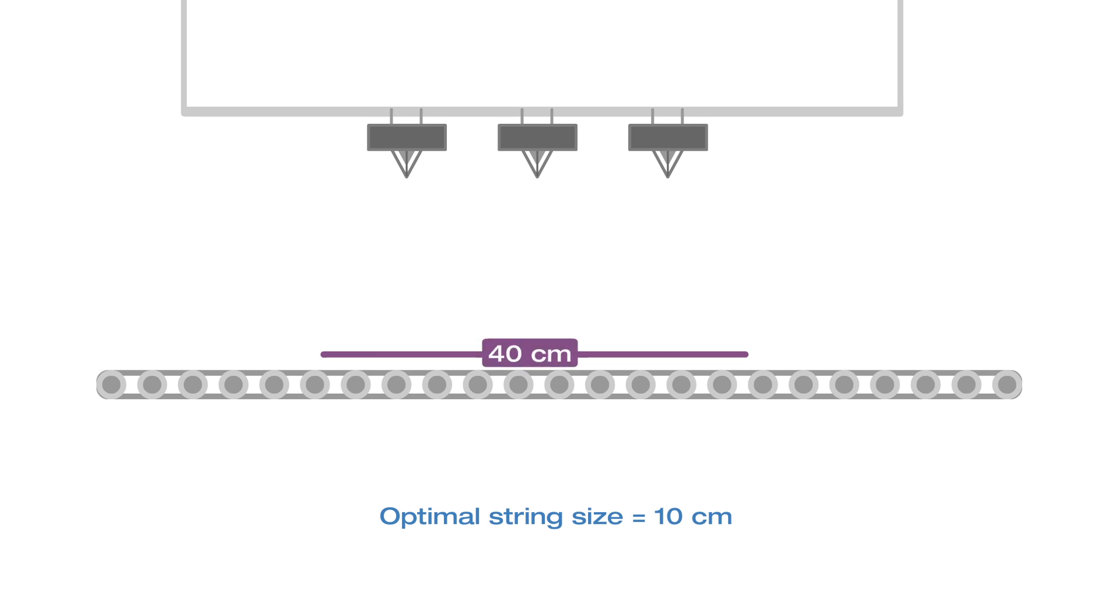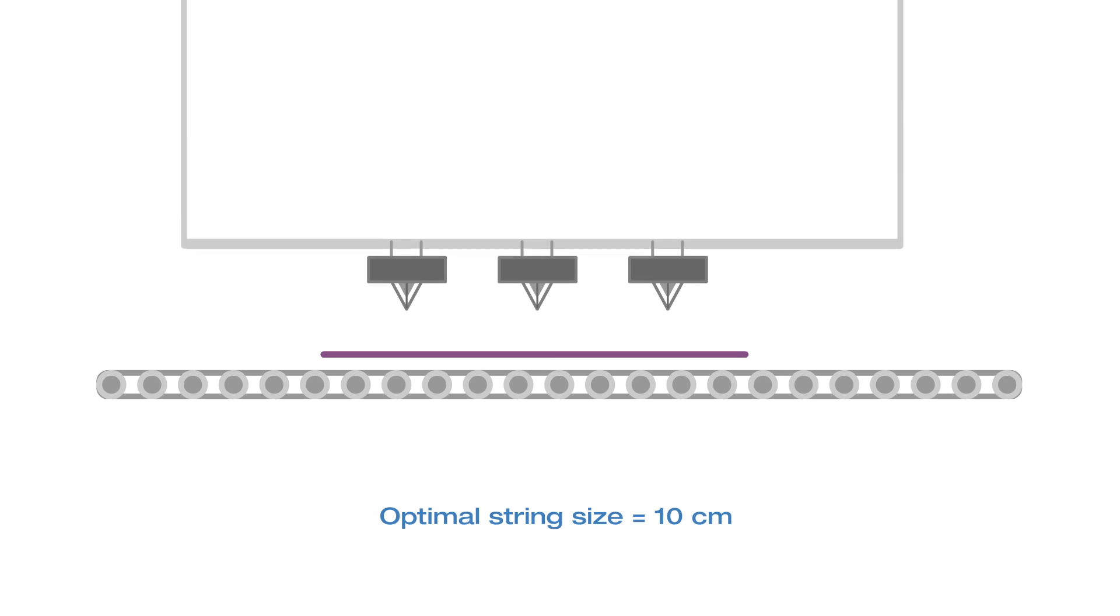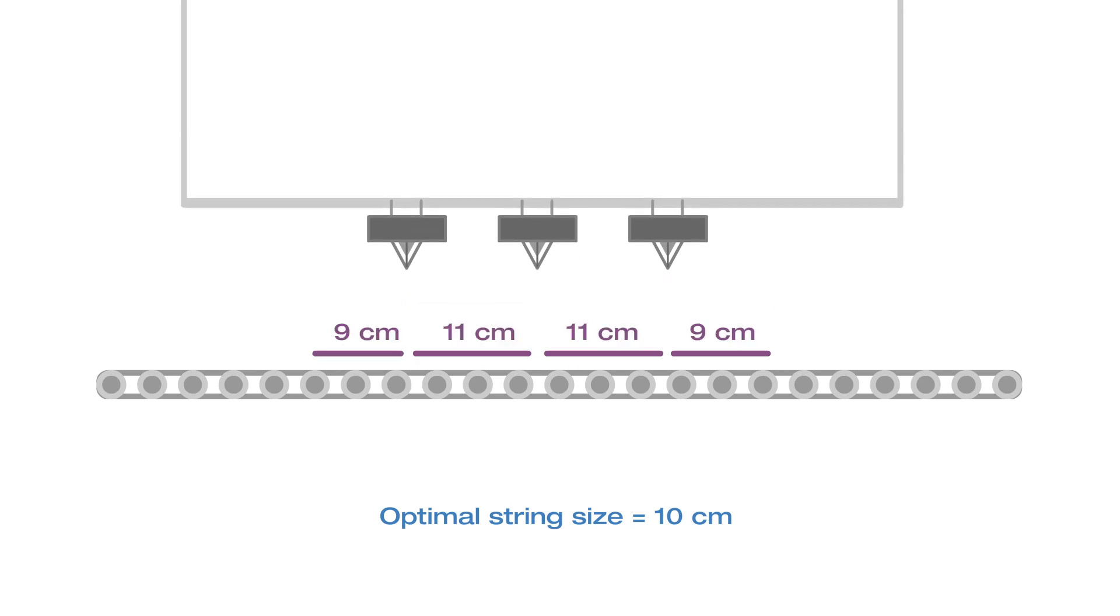Imagine a factory that has a production line cutting string to desired length. The string factory has three cutters. Each string must be cut to approximately 10 centimeters. For a 40 centimeter input string, the resulting pieces are cut into 8 to 12 centimeter pieces, perfect for achieving our optimal string size.